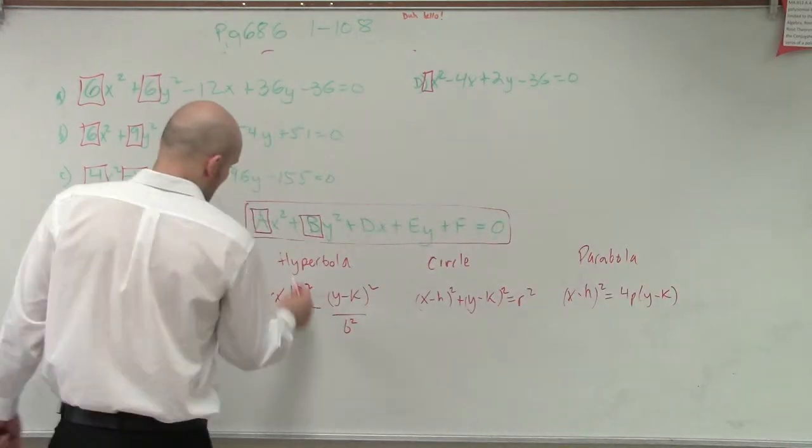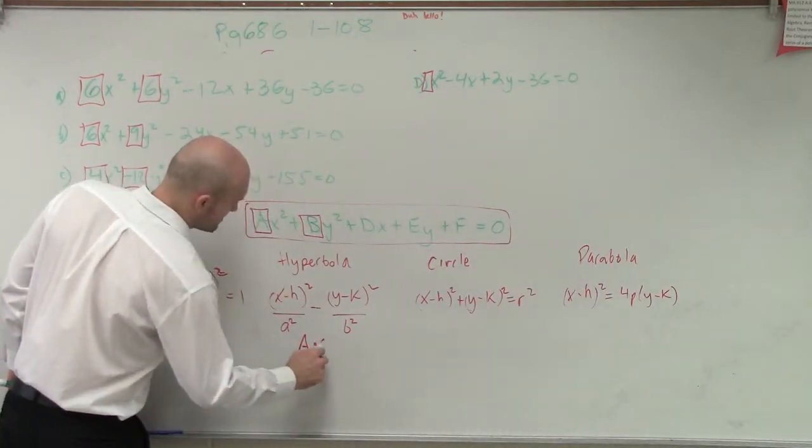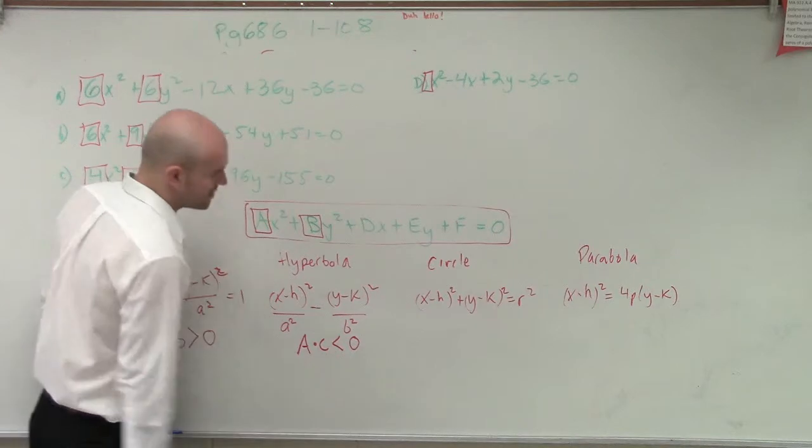And then, yeah. So a hyperbola is A times C when it's less than 0.